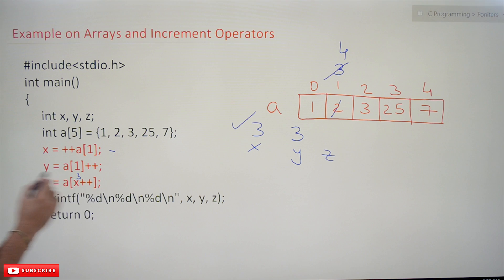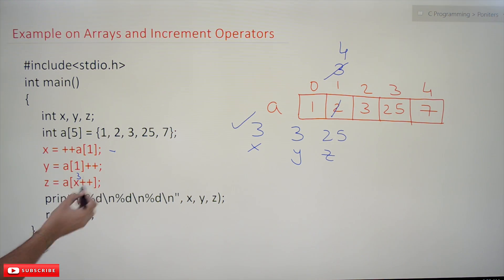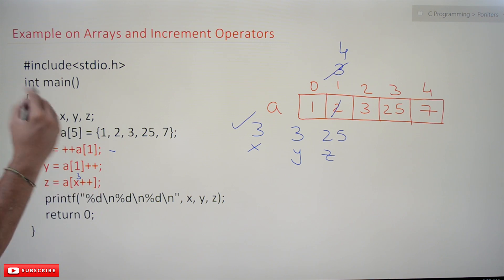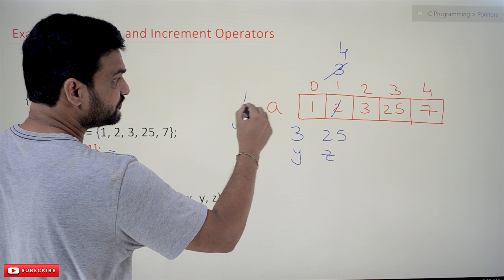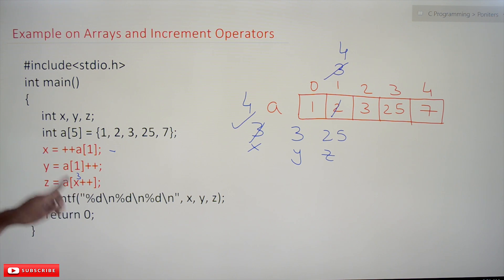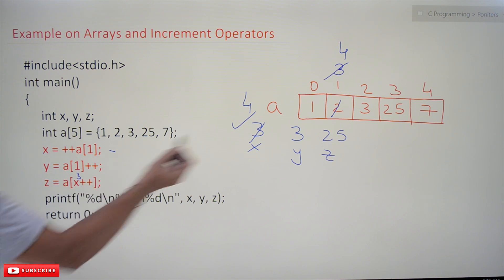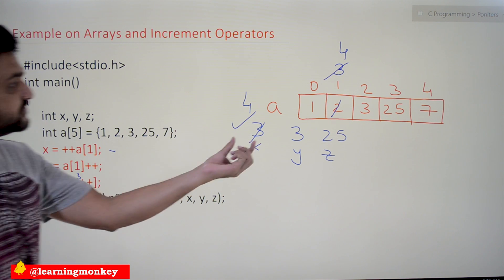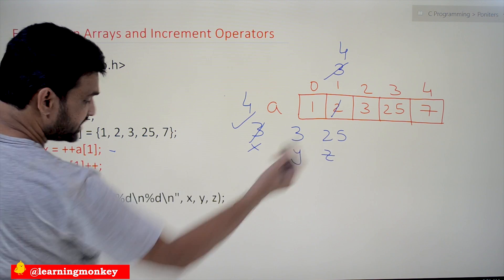25 will get stored in z, so the value of z is 25. Now x will get incremented: 3 was used first, and later x becomes 4. Whenever x is used in a later step, we are going to use 4. x post-increment means: first use the value of x (3), access a[3] which is 25, and then x gets incremented to 4. These are the two steps where we usually make mistakes.